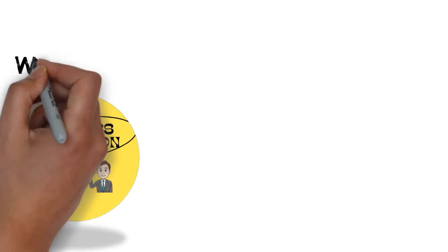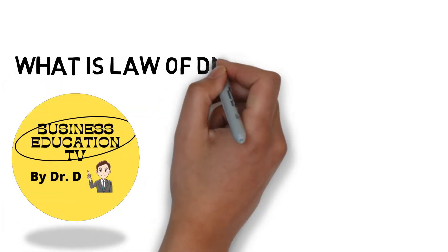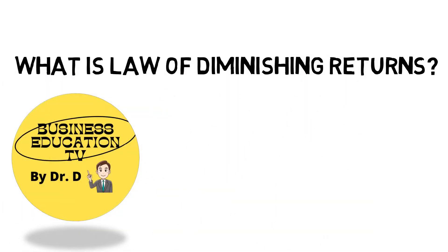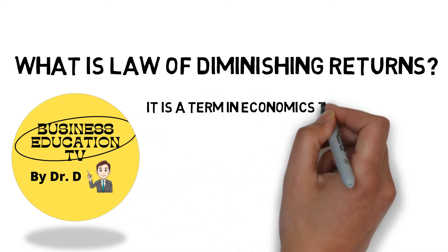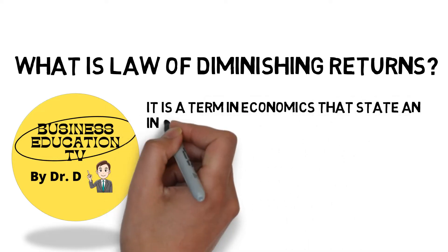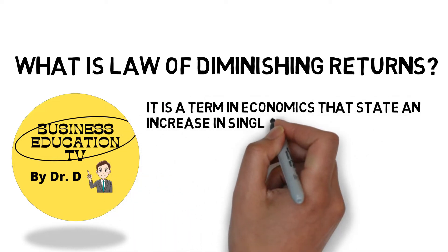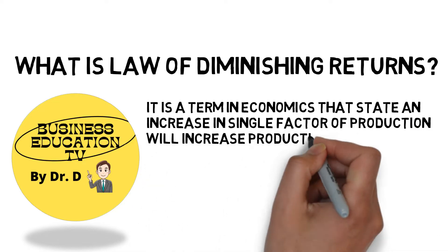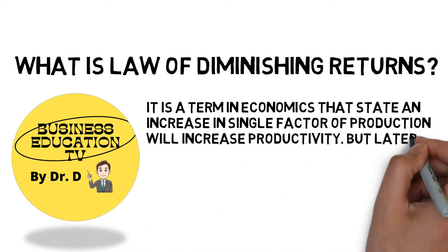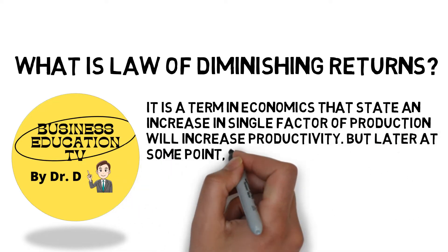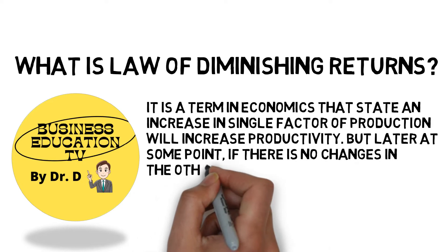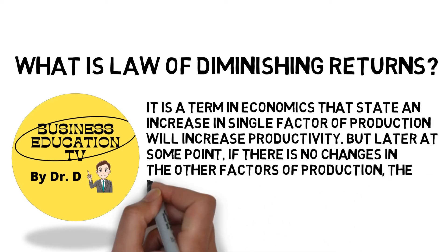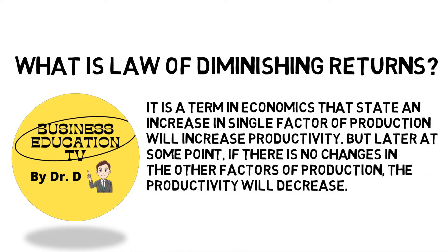Now let's talk about what is the Law of Diminishing Returns. It's a term in economics that states an increase in a single factor of production will increase productivity, but later, at some point, if there are no changes in other factors of production, the productivity will decrease.